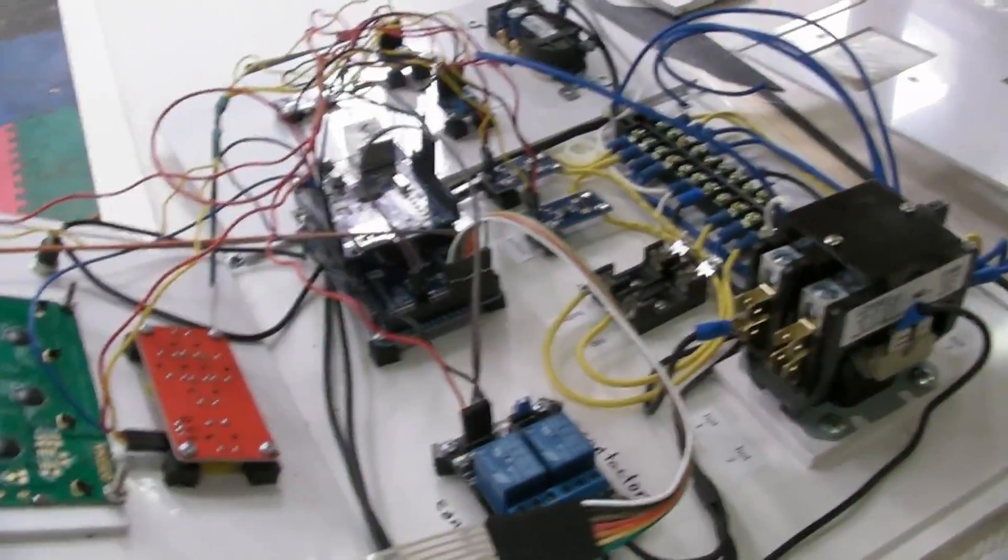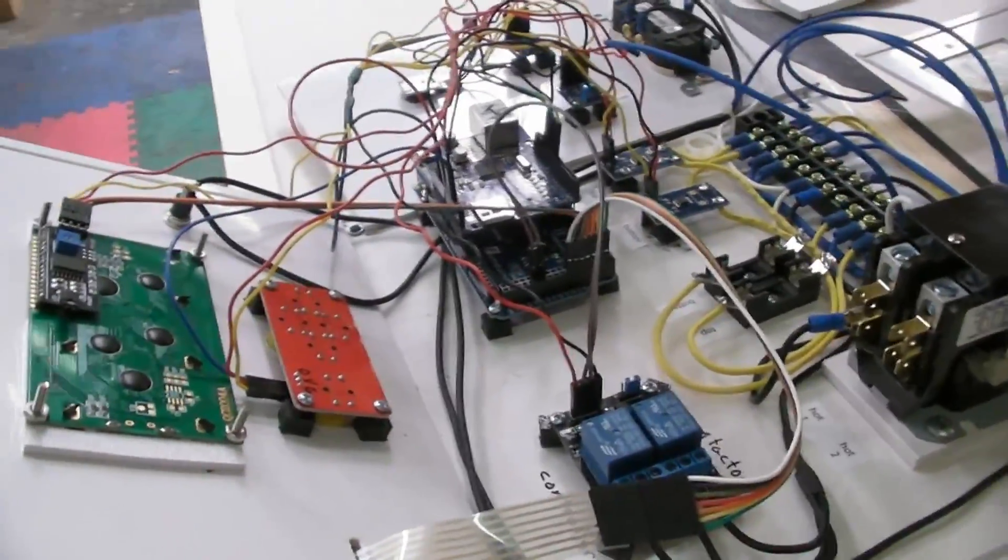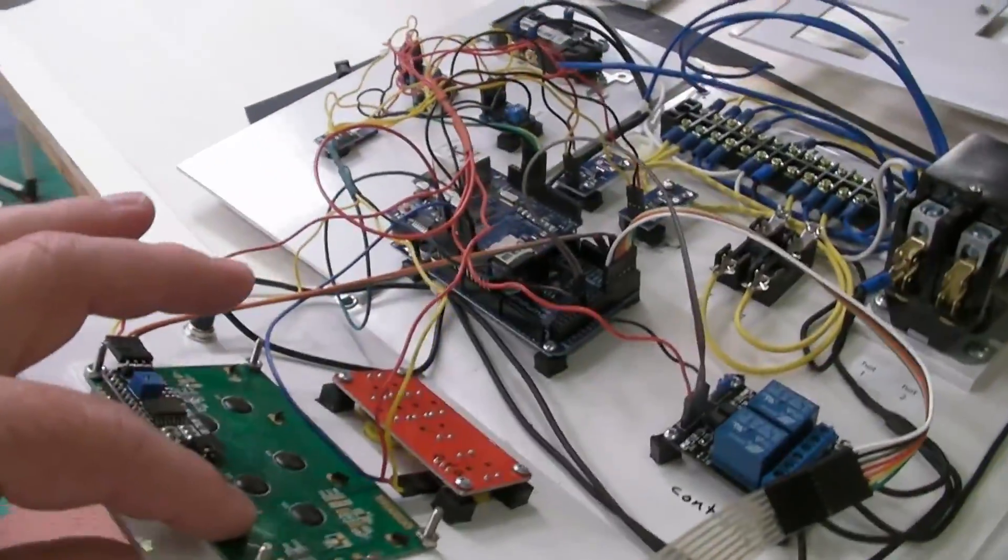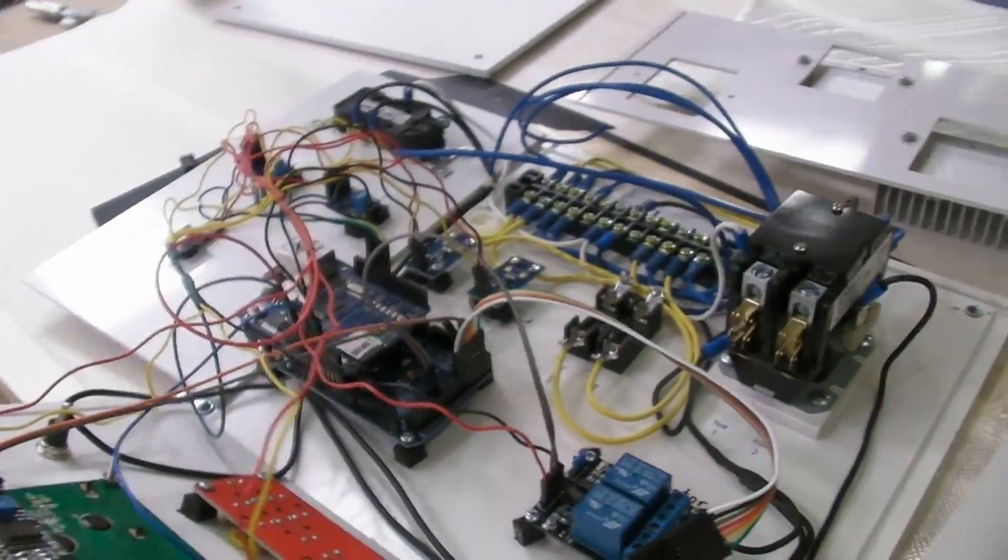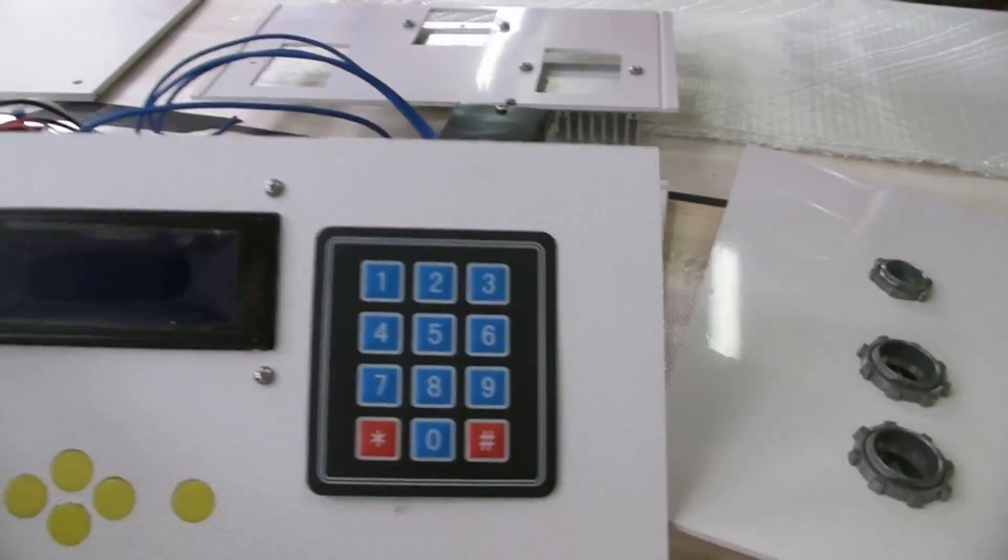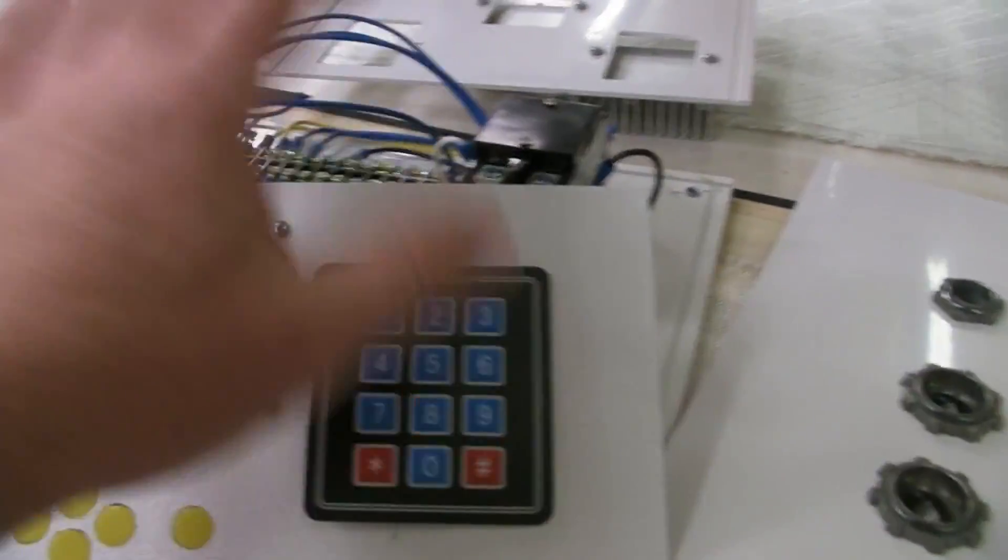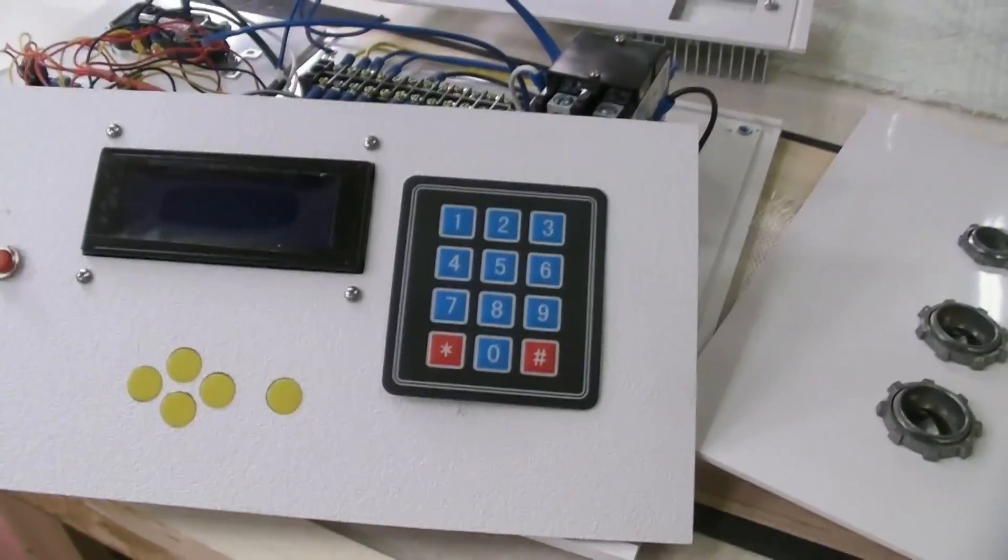We've got a relay board in here that actually turns the Arduino on and off. And then there's an LCD and a five-button controller for our menu. And then on the front here, we've also got a touchpad, which is where the operator enters the serial number.